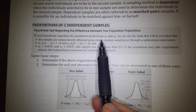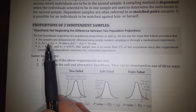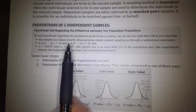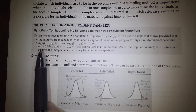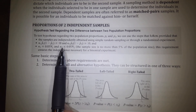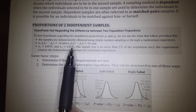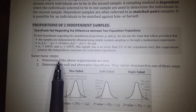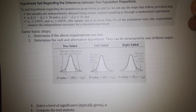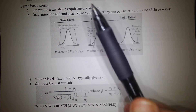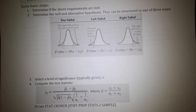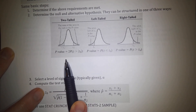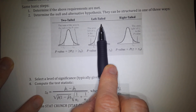For proportions of two independent samples, we're going to first discuss hypothesis testing. To test hypotheses regarding two population proportions p1 and p2, we can use the steps that follow, provided that the samples are independently obtained through a randomized experiment, and n times p-hat times (1 minus p-hat) is greater than 10 for both the first and second sample — this ensures the distribution is normal. Also, both samples must be less than five percent of the total population they come from, which ensures the independence necessary for a binomial experiment.